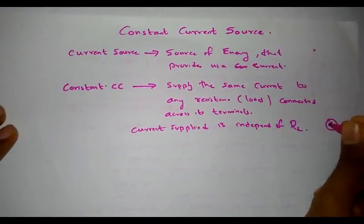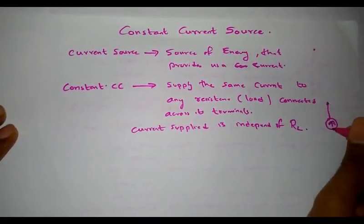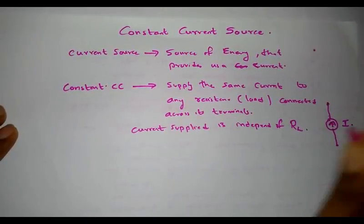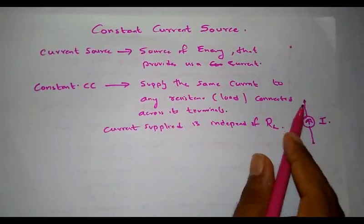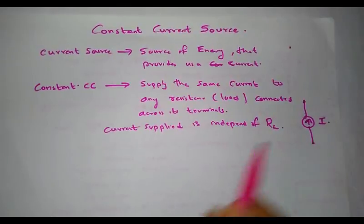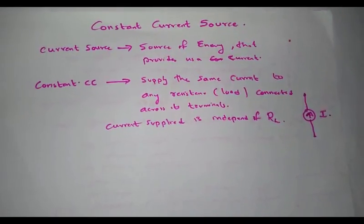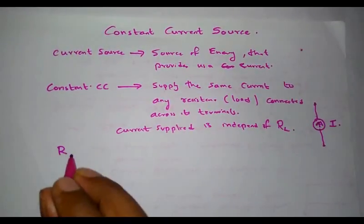A constant current source can be represented by a symbol — an arrow which represents the direction of flow of current, labeled with constant current I. This is the representation for a constant current source.